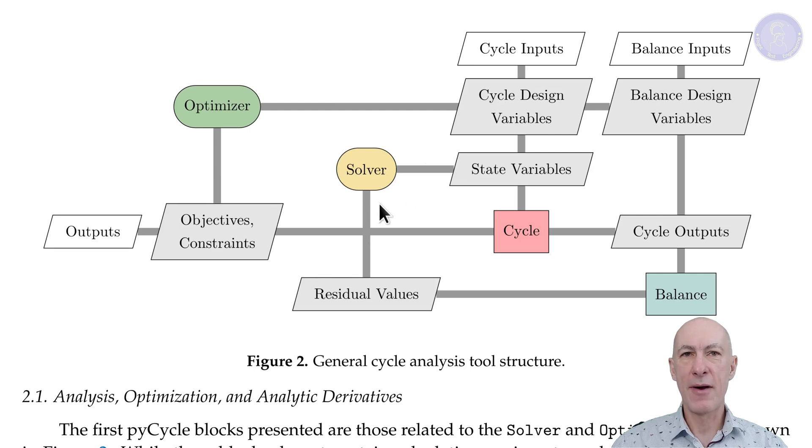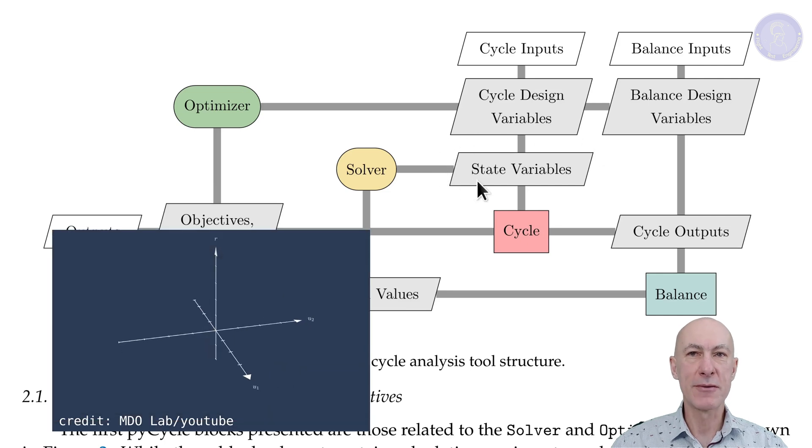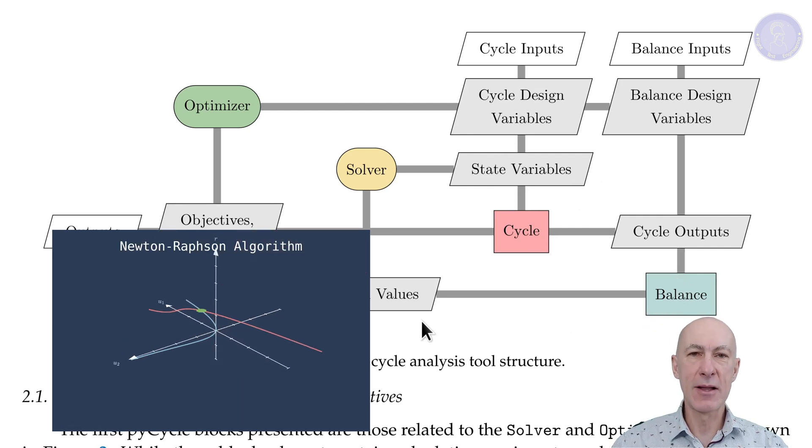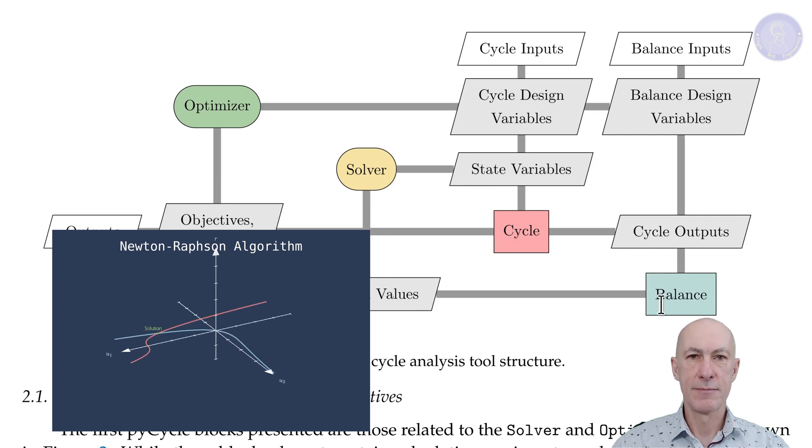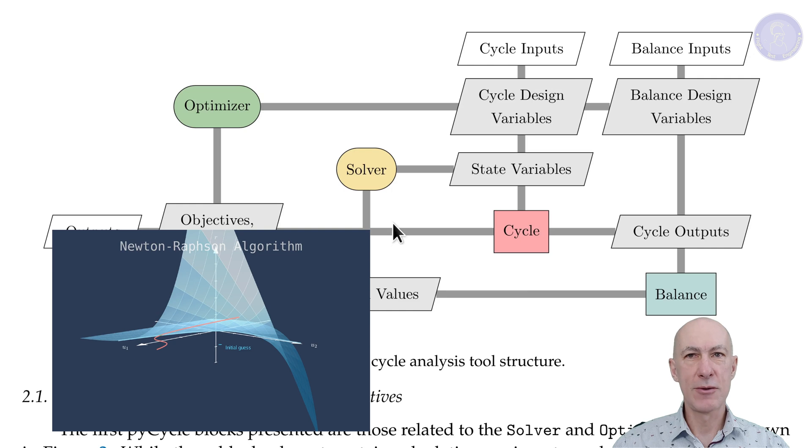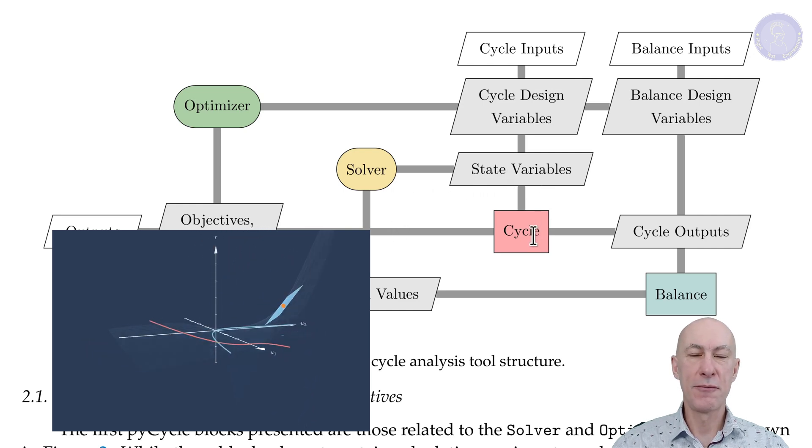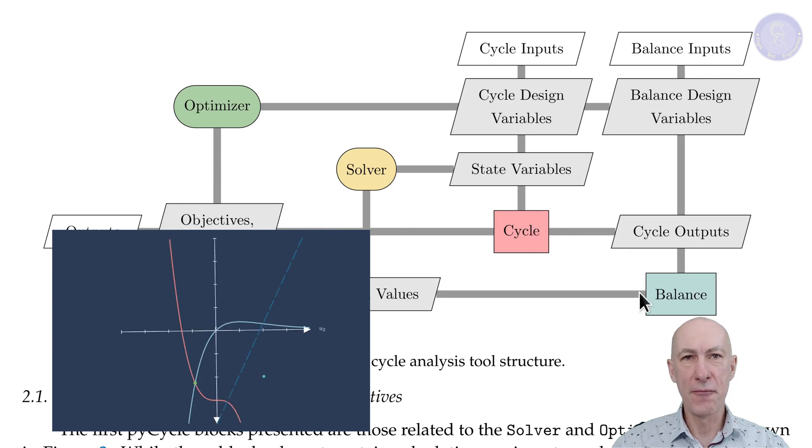It is responsible for finding a set of implicit state variables, which are called engine parameters for us, that make the balance block's residual equations equal to zero. That will effectively mean that a physically valid balanced engine design has been found. To do that, the solver will iterate on the state variables to find an engine that does not infringe in any of the balance equations.